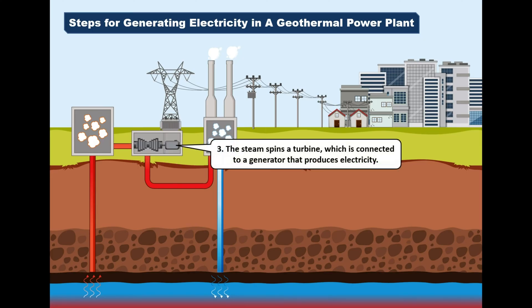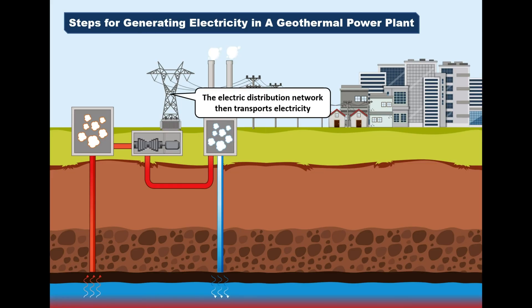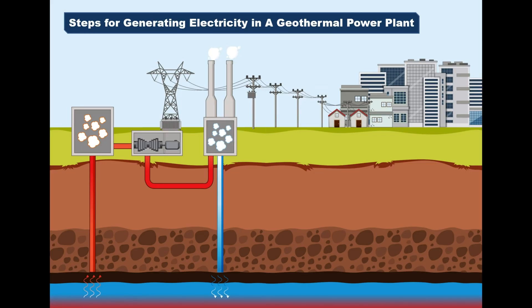Number 3: The steam spins a turbine which is connected to a generator that produces electricity. The electric distribution network then transports electricity to both industrial and residential consumers.